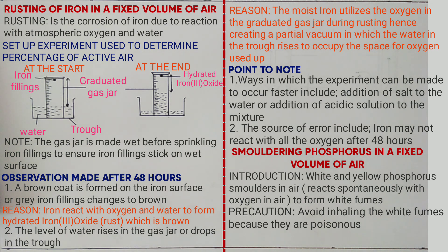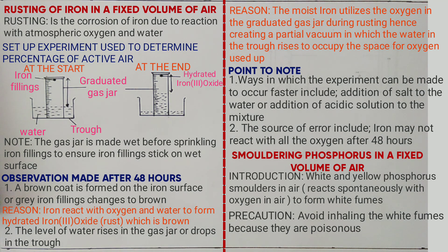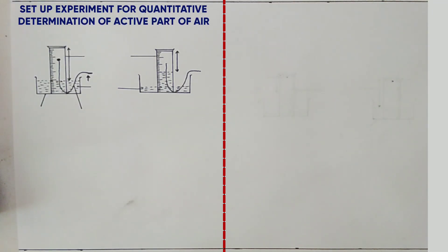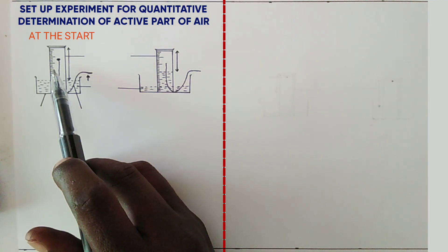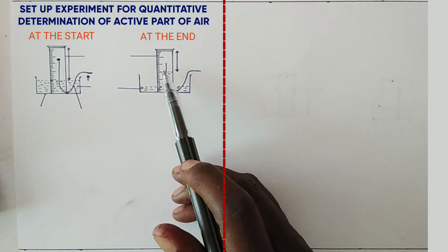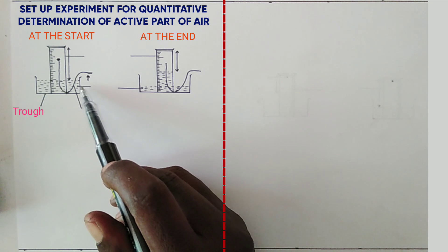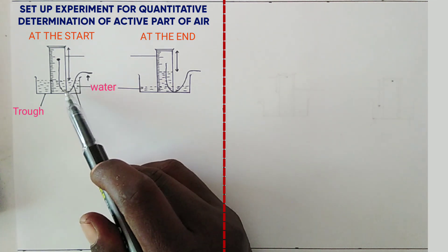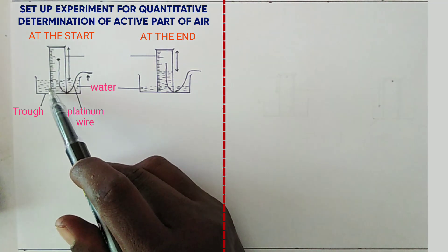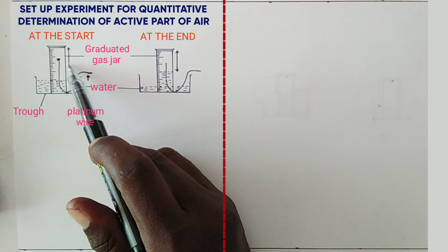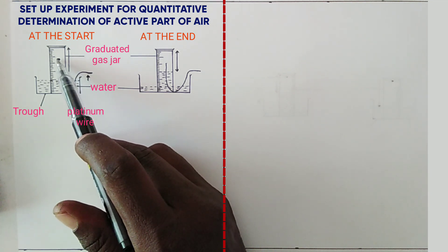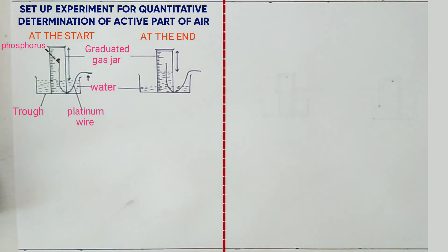Note for this experiment: white phosphorus should not be allowed to come near the walls of the graduated cylinder so that the walls do not stop the smoldering process. The setup diagram shows an experiment used to determine the percentage of active air using phosphorus. At the start of the experiment we have a trough, water, a platinum wire, a gas jar containing a certain volume of air, and phosphorus placed inside.